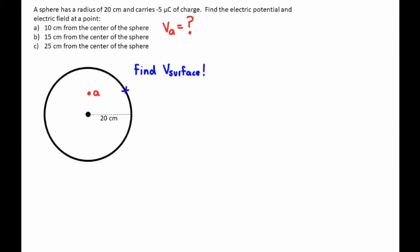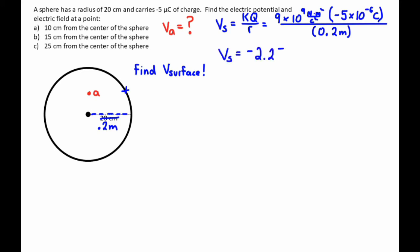But we can use the fact that the whole sphere is an equipotential, and we can figure out the voltage at the surface of the sphere. So, to do that, I would just do KQ over R, where R is the distance from the center of the sphere to the edge of the sphere, which in this case is the radius of 0.2 meters. And so, after we figure that out, it's just a simple plug and chug, and we get negative 2.25 times 10 to the fifth volts, and so that is the electric potential at point A. So, I can't directly calculate it, but I can calculate it using the fact that the whole sphere is one equipotential surface.